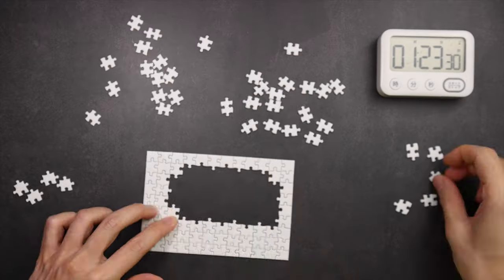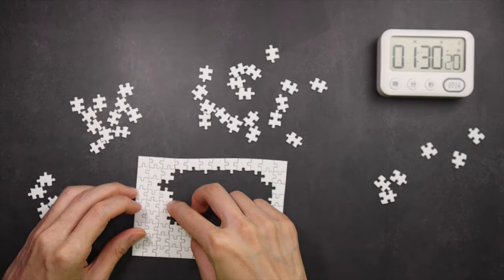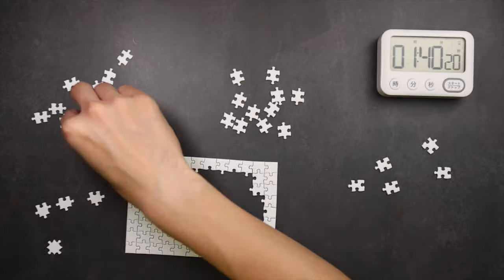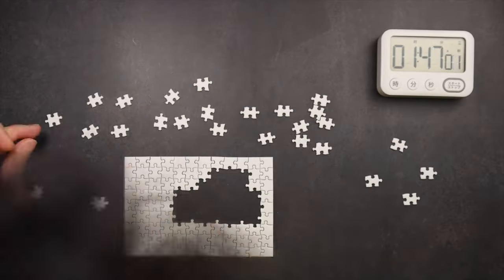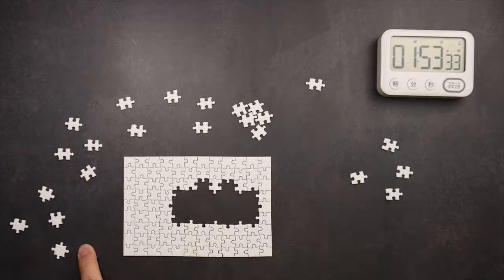As you can see sometimes there are mini bursts where I can place a few pieces consecutively. It's mainly because some of the shapes of the pieces are quite special and I can eyeball it and just put it in the correct place.